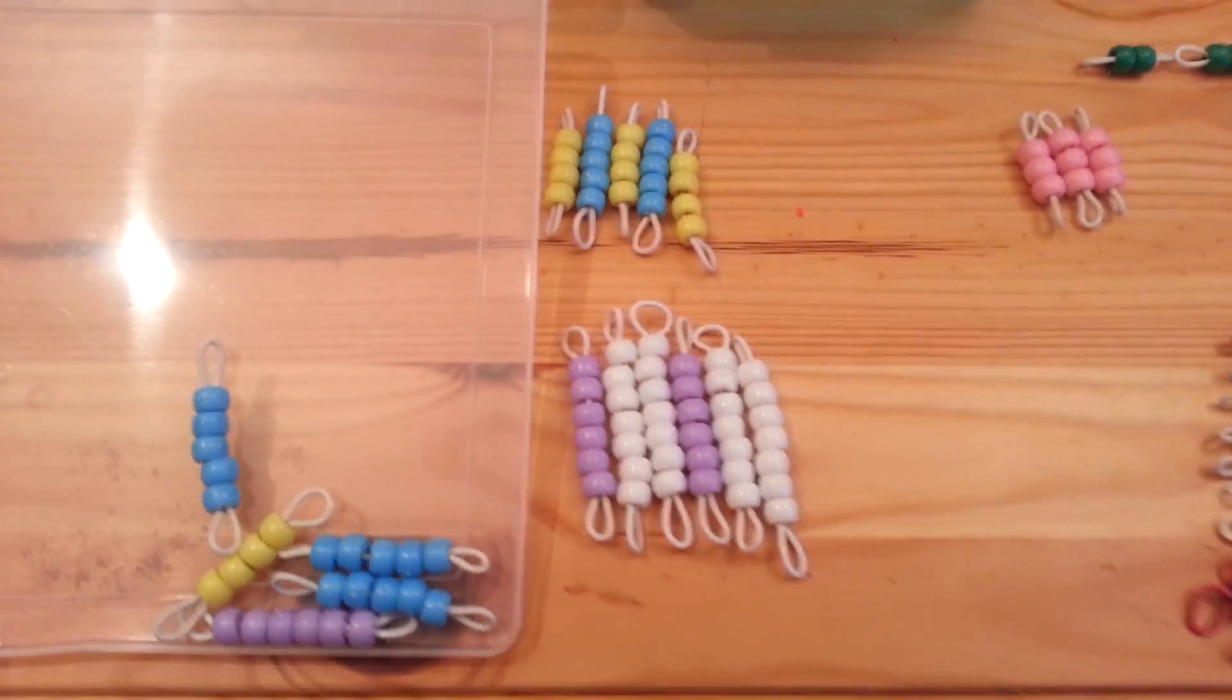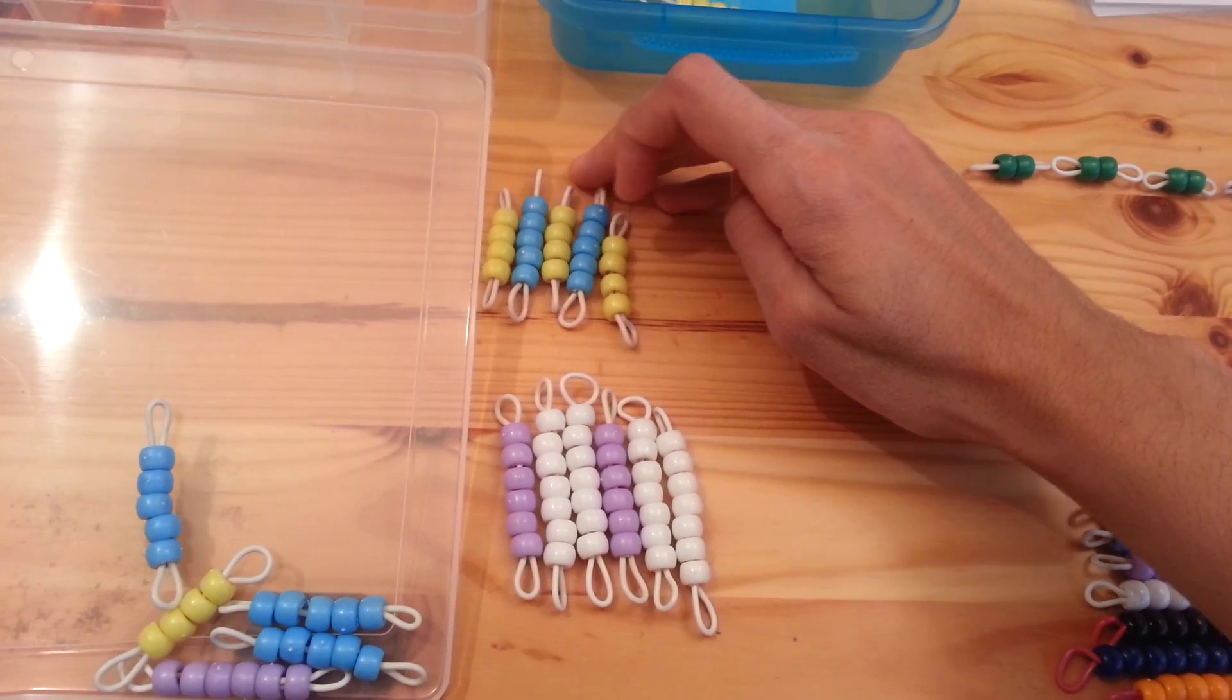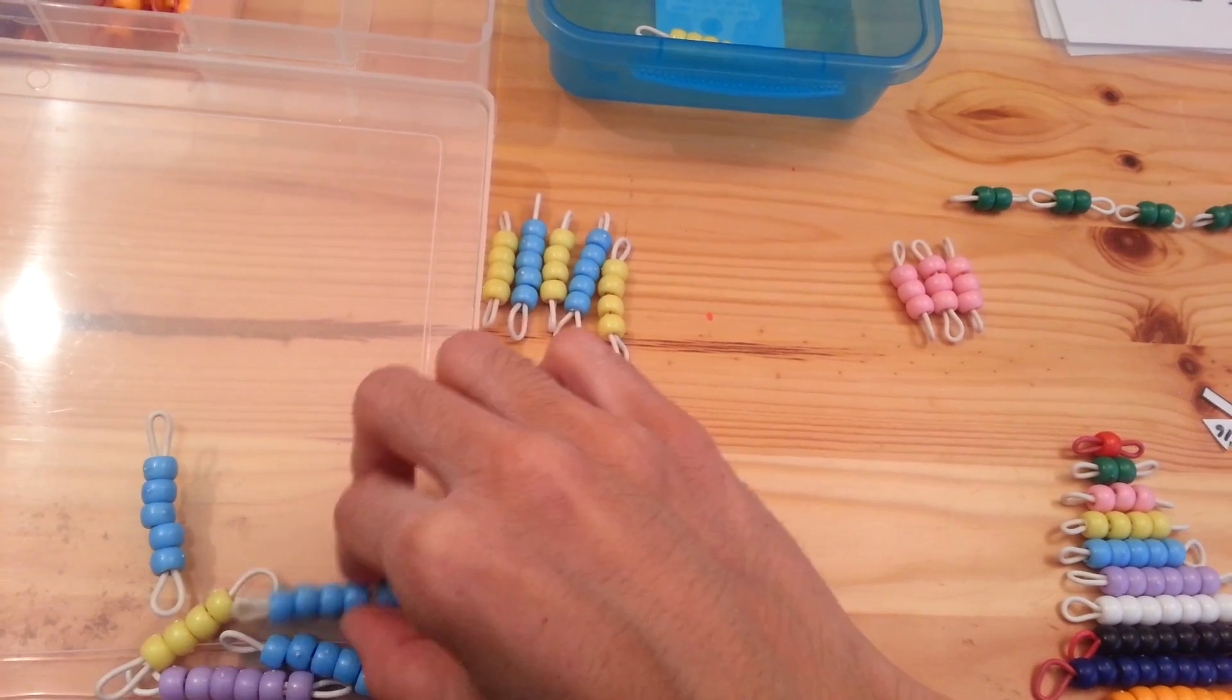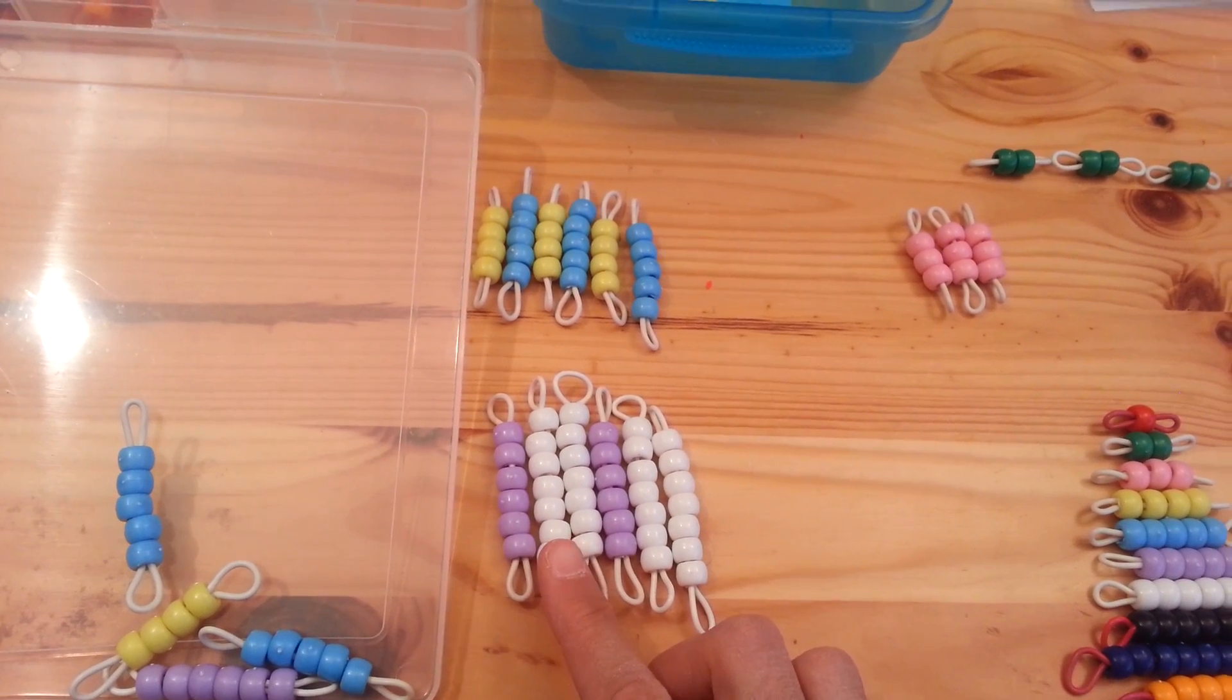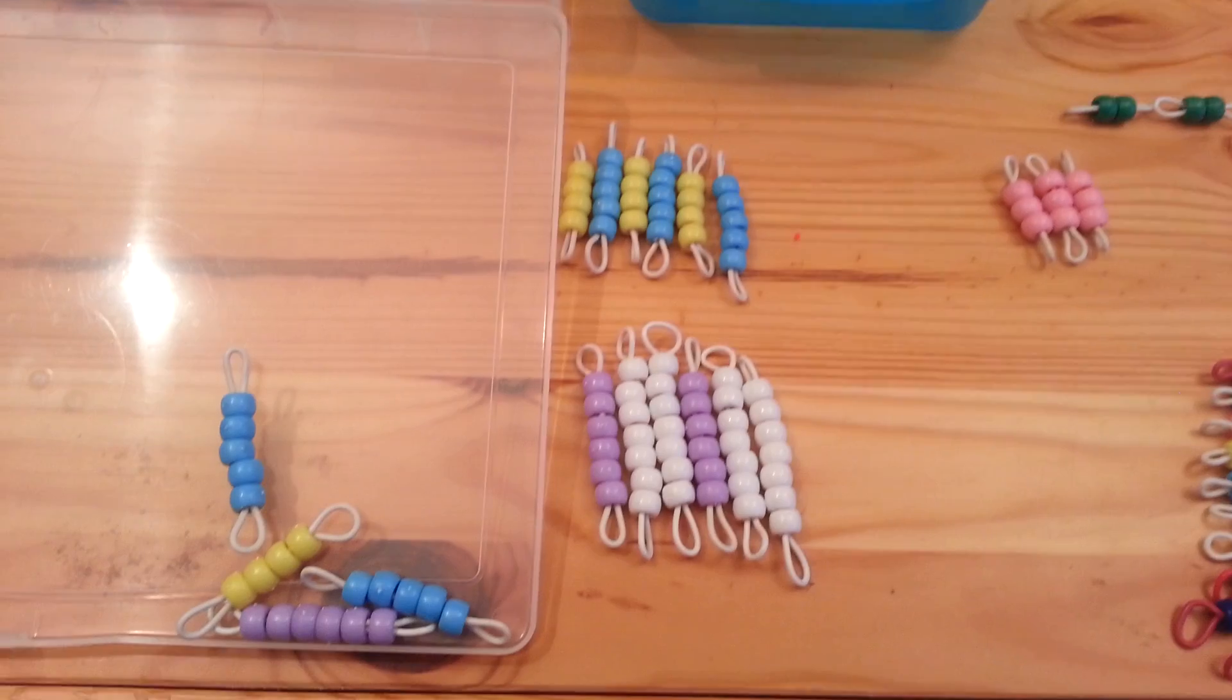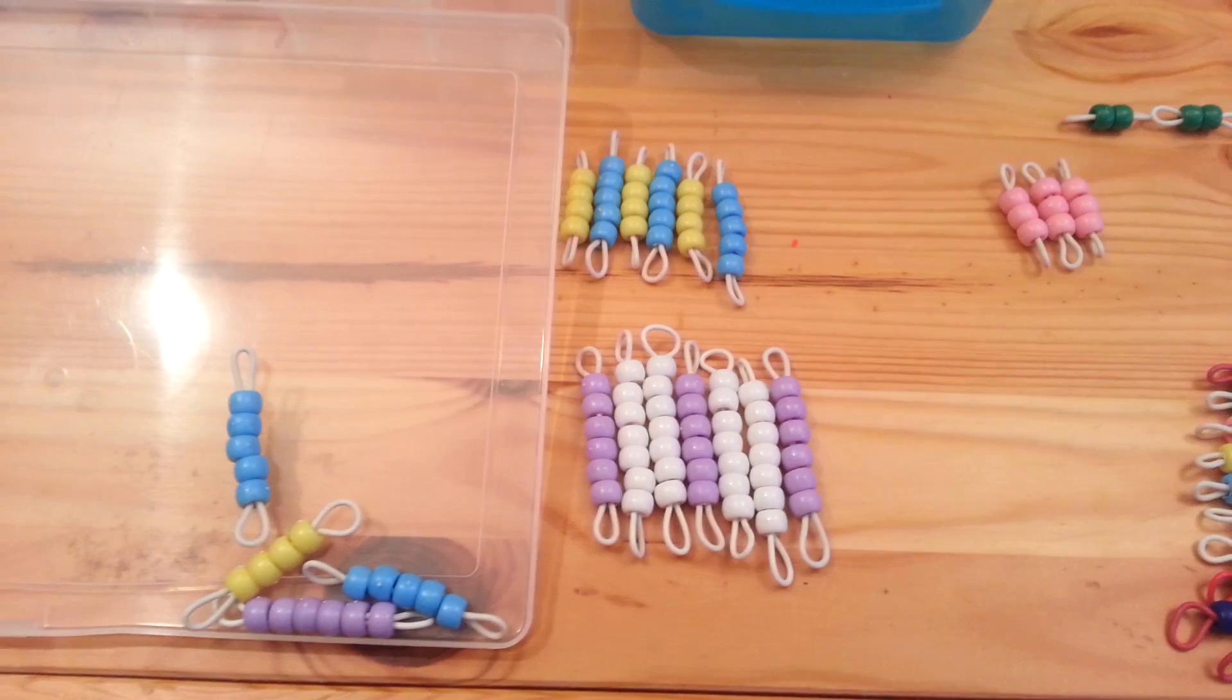Another activity you can do is patterns. You can teach patterns very easily with these beads. Yellow, blue, yellow, blue, yellow. What comes next? Blue. And you may want to continue on and on until you have finished the pattern. Here we have purple, white, white, purple, white, white. What comes next? And then you have the child put the beads and continue until they have used all of them to create the pattern.